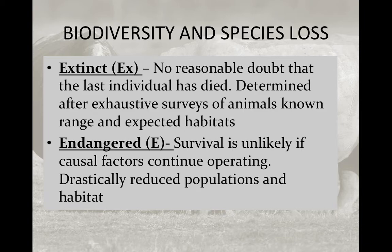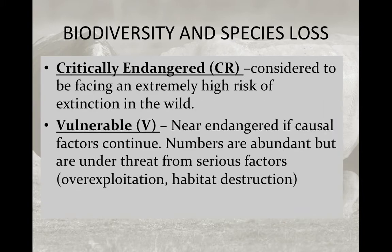Extinct means there is no reasonable doubt that the last individual has died, determined after exhaustive surveys of the animal's known range and expected habitat. In order for an animal to be considered extinct, it must have been demonstrated to have existed in the first place — and many animals entering habitat loss or endangered status aren't even discovered yet. Endangered species are very unlikely to survive if operations continue as normal; they have drastically reduced populations and habitat. Critically endangered means they are facing an extremely high risk of extinction in the wild.